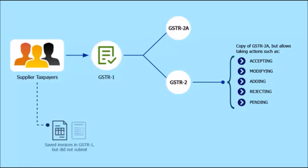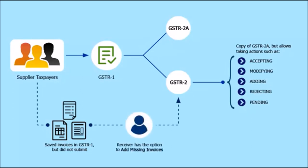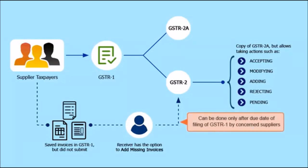If a supplier has saved invoices but has not submitted GSTR 1 yet, the receiver can add those auto-populated saved invoices using the Add Missing Invoice Details option and file GSTR 2. Such actions can be taken only after the due date of filing of GSTR 1 by the concerned suppliers.